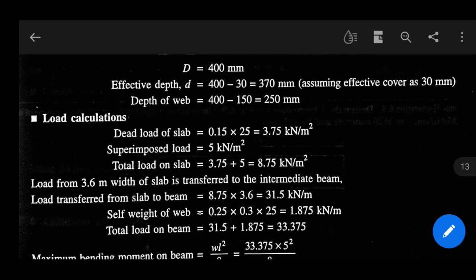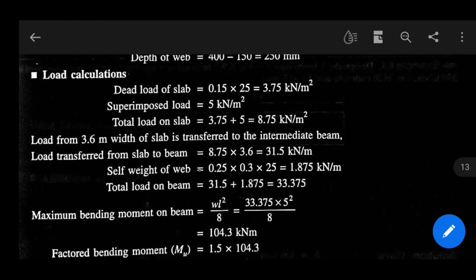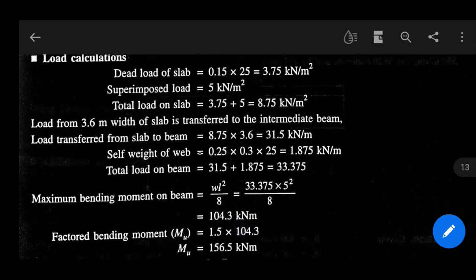So total load on the beam will be 31.5 plus 1.875, that equals 33.375. Okay, now maximum bending moment on beam for simply supported beam is WL square by 8. That equals 33.375 into 5 square by 8, that equals 104.3 kilo Newton meter. Now you have to make it factored bending moment by multiplying load factor. So MU equals 1.5 into 104.3, that equals 156.5 kilo Newton meter.